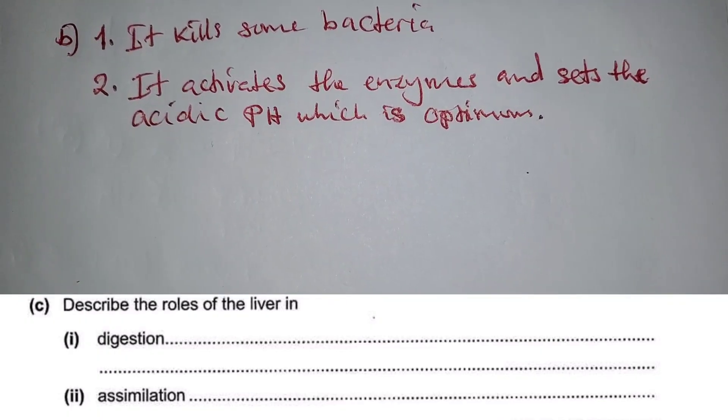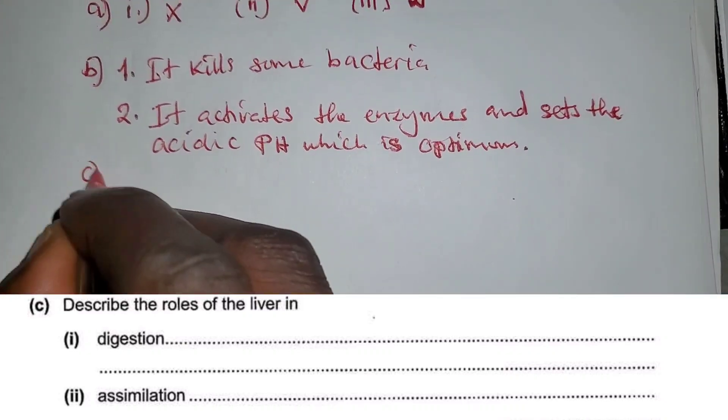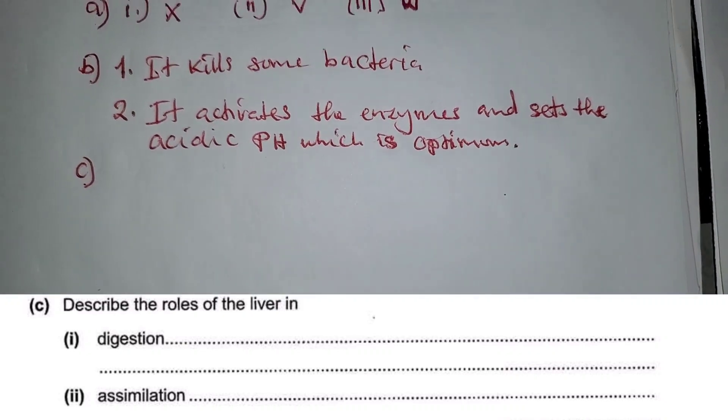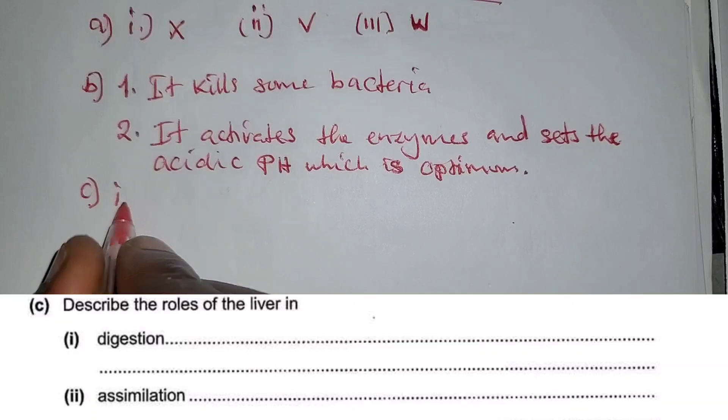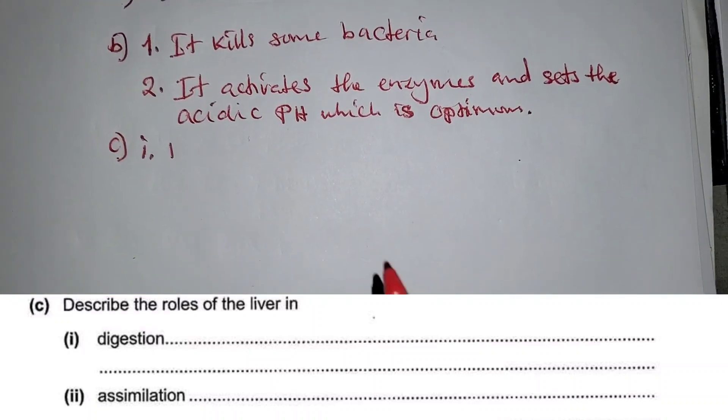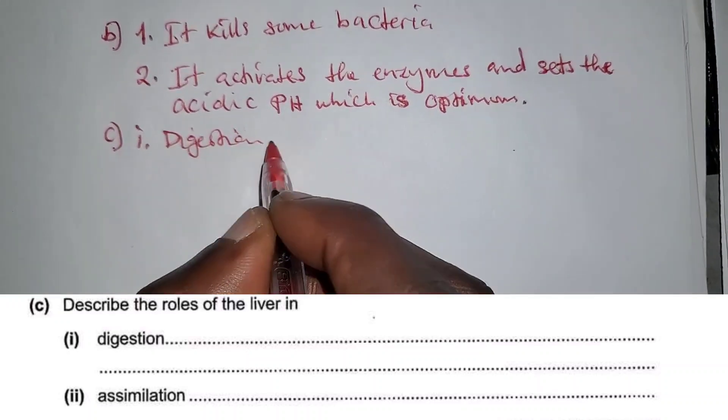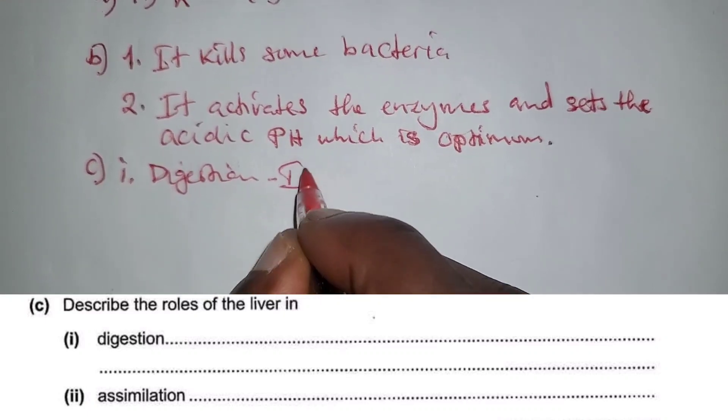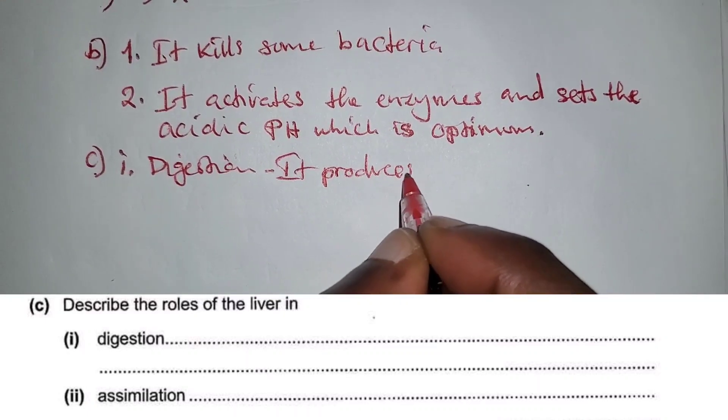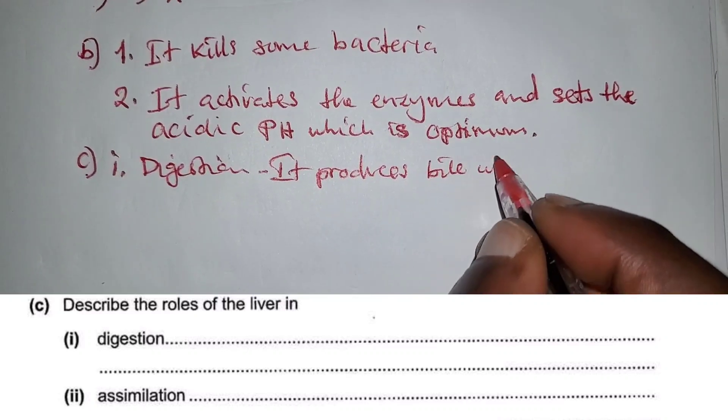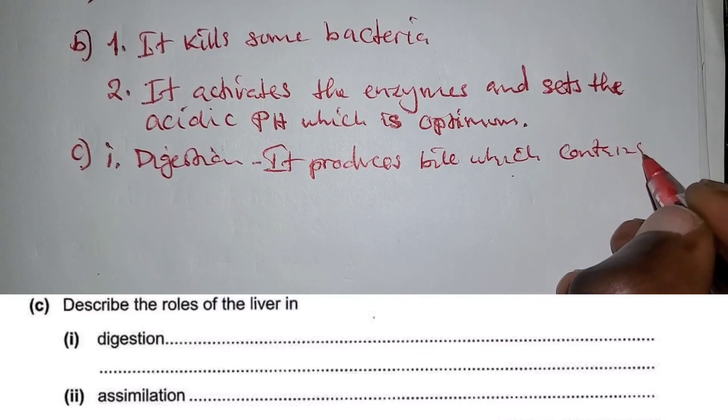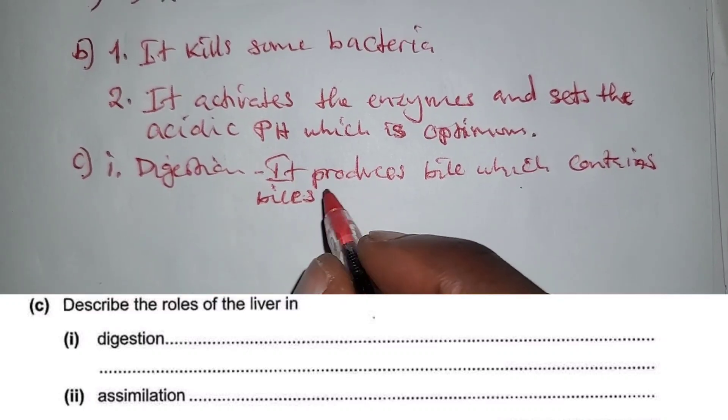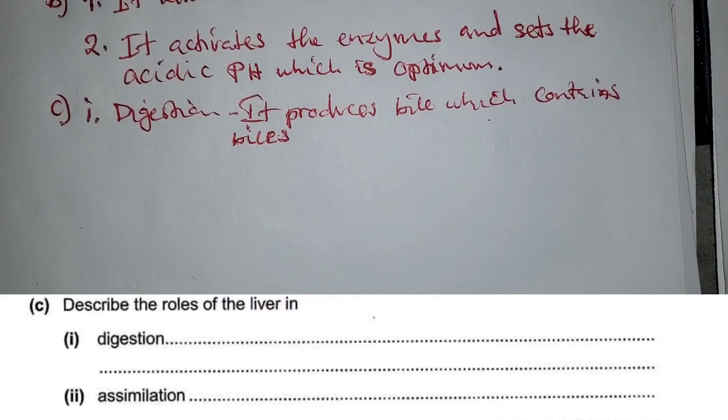Let's go to the next question, which is question C. Question C is saying describe the role of the liver in digestion. So the role of the liver in digestion is that it produces bile, which contains bile salts.